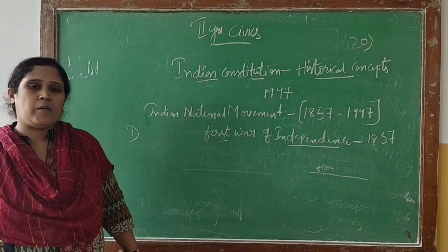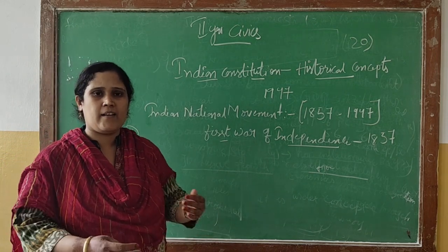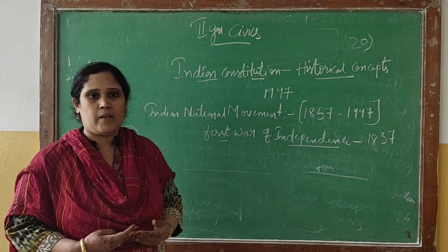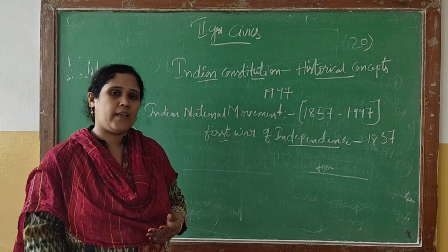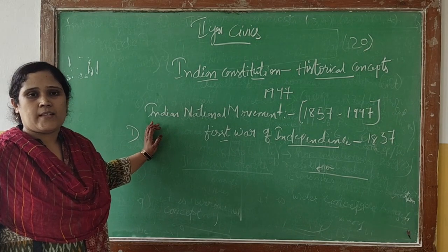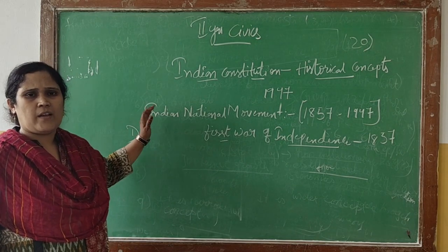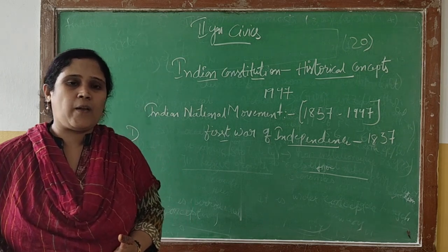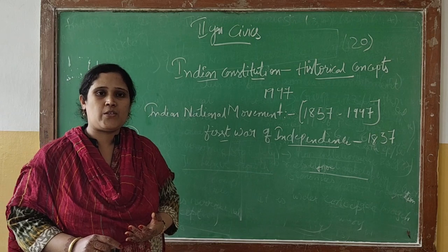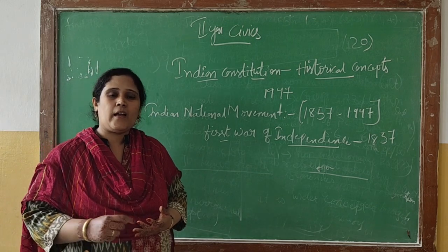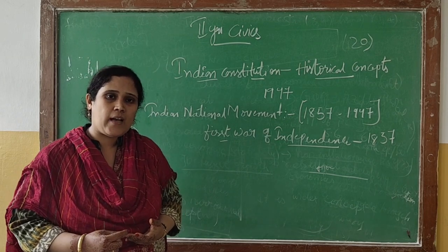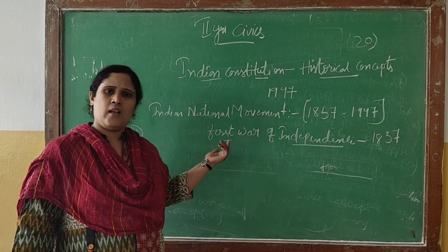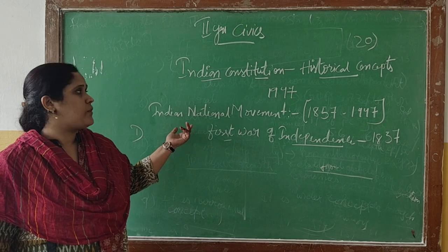As development has been taken into consideration — how people got education and they need development — this development or non-development can take place only through political aspects in society for the survival of human beings. We have discussed in the past year about all the basic concepts: how the evolution of the state came into existence, the importance of the state, the formation of nationality, nationalism, and equality.